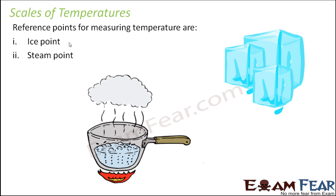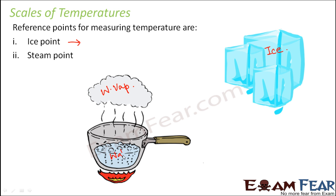So what is the ice point? The ice point is nothing but the freezing point of water — the temperature at which water starts to freeze, converting into ice. When water boils, it forms water vapor. So the ice point is the point at which water gets converted into ice.